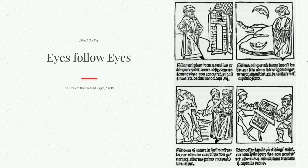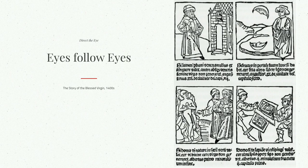Eyes also follow eyes. If you have content with photos of people and they're looking in a certain direction, people will be inclined to look in that same direction. In this case, you have the saint looking to the right, the moon looking down and to the left, the people in the bottom left looking to the right, and finally the last person looking back to the left — this forms a composition that moves people's eyes along to each of the boxes. So if you want someone to look at your text on the right, you can have a photo on the left with a person looking to the right.